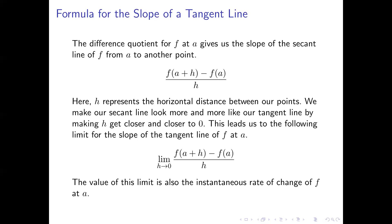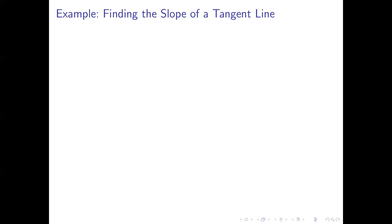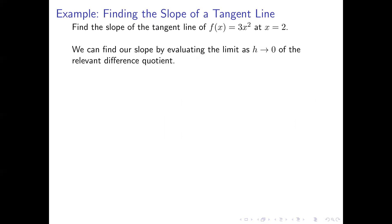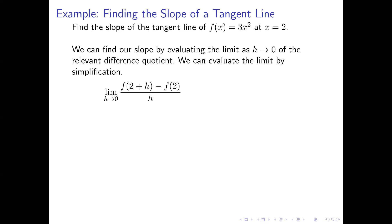That limit, if it exists, will give us the instantaneous rate of change of our function at a. Let's look at an example. Say we're working with the function f(x) = 3x² and we want the slope of its tangent line at the point where x = 2. We'll take the difference quotient for our function at x = 2 and evaluate its limit as h approaches 0. Here's the limit: the limit as h approaches 0 of [f(2 + h) − f(2)] / h, where 2 is playing the role of a.